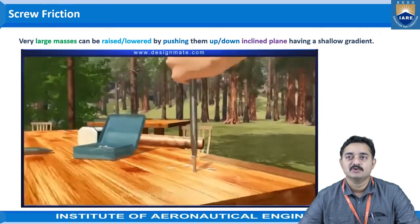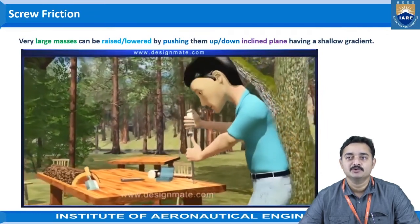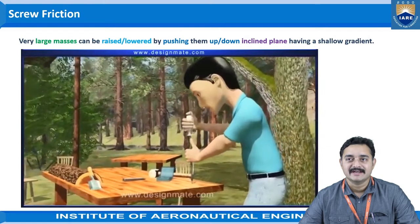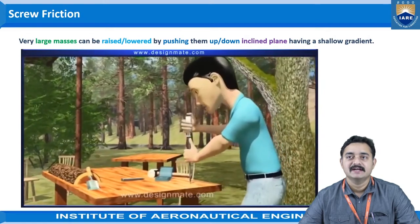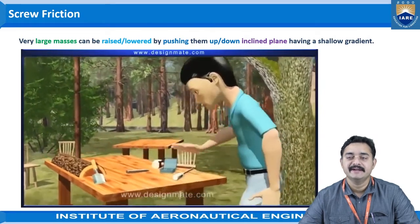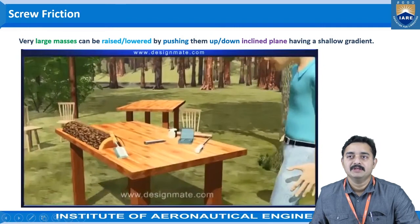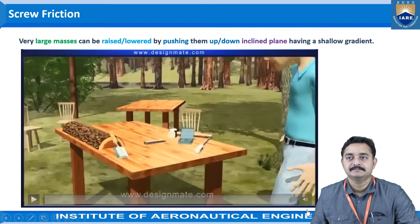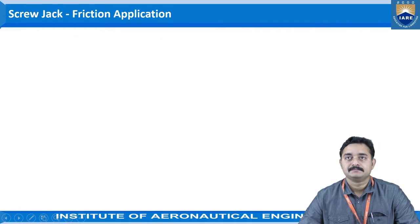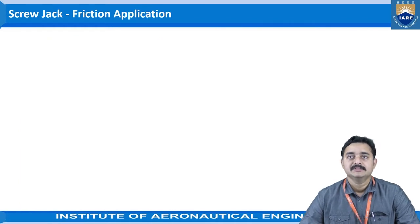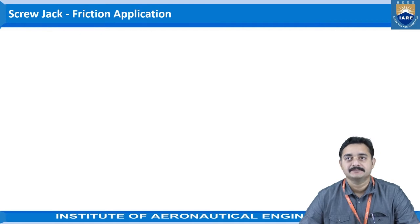In this way, the rotational force is converted into the translatory force, and the screw enters into the part where it needs to be implemented. Now, let us see the screw friction application in screw jack.